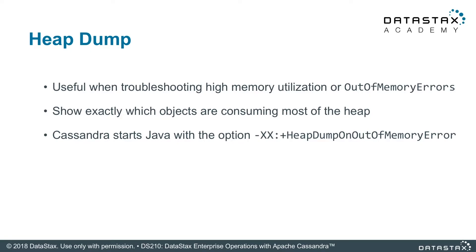If something goes seriously askew with your Apache Cassandra nodes and they run out of memory, you may need to dive deep into understanding what is happening. In this case, you may want to take a look at a heap dump. A heap dump is a tool that shows you the contents of your heap when the Apache Cassandra process dies.